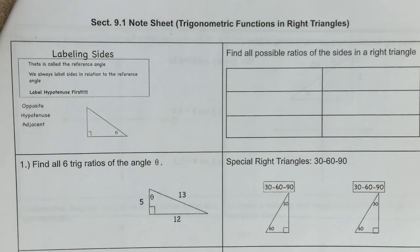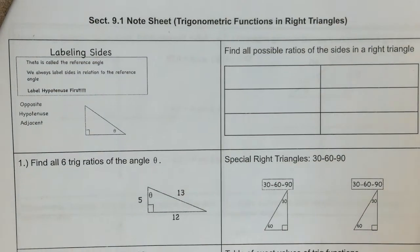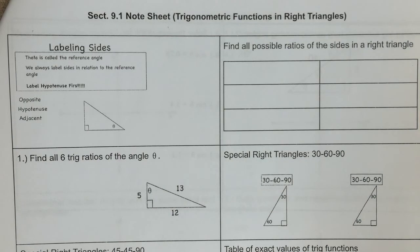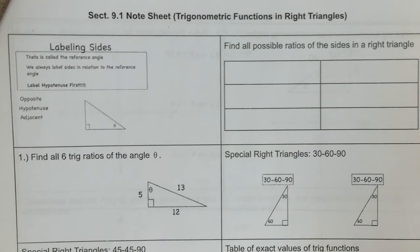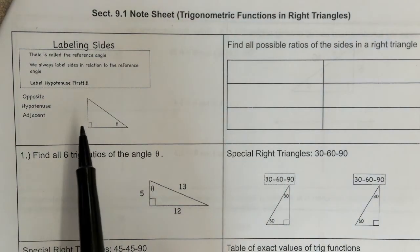Let's talk about section 9.1. We're talking about trigonometric functions and right triangles. It's going to piggyback on what we've been talking about, which is sine, cosine, and tangent. We're going to add some other ratios in there as well and apply them in a little bit different ways.